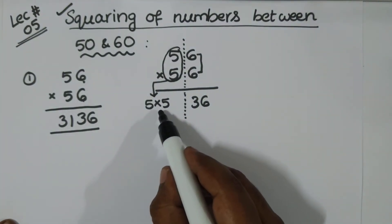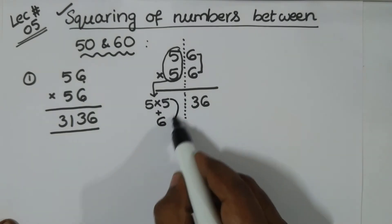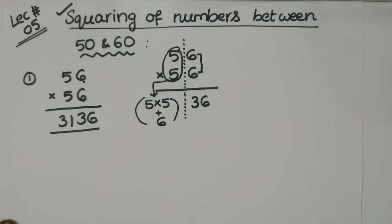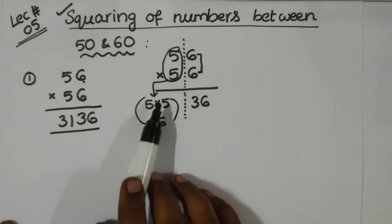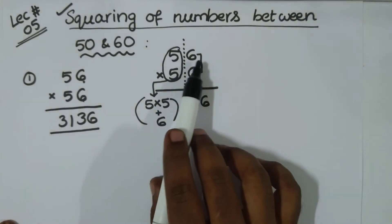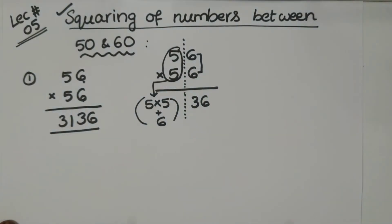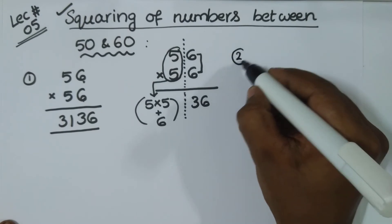So, 5 times, I mean 5, 5 is plus 6. This is what the left hand side. So, 25 plus 6 is 31. 6, 6 is 36. That's it. Let's take example number 2.